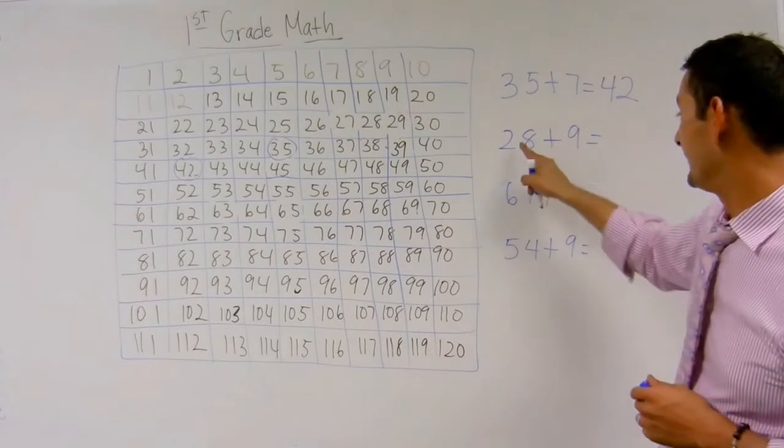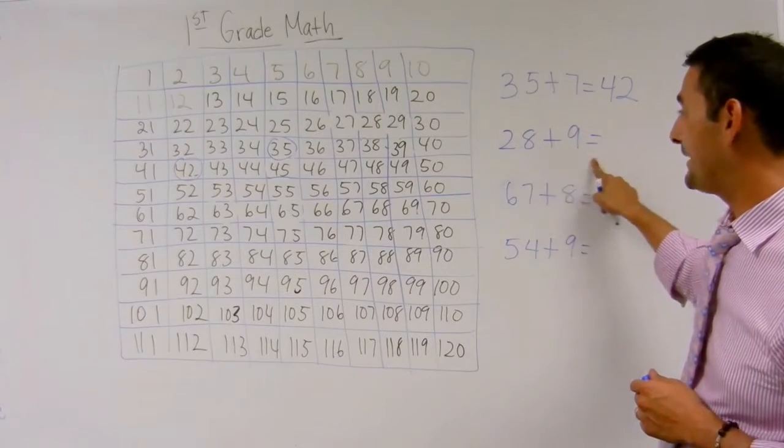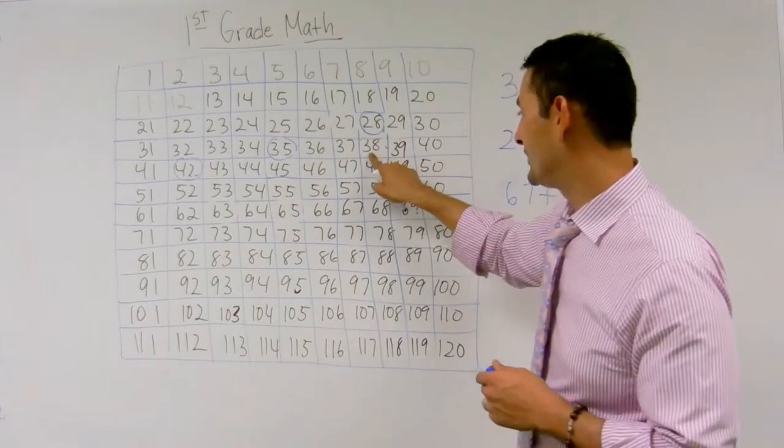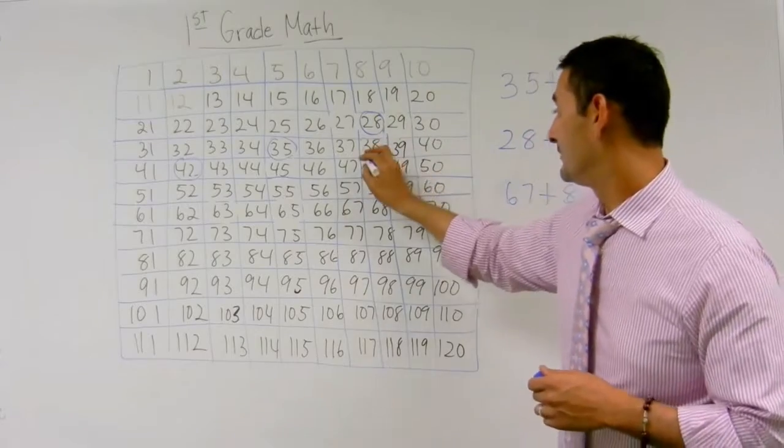Now let's take a look at the next number. Here we have the problem 28 plus 9. I'm going to start with 28. I'm going to go down 10, which is 38 right here.